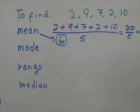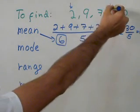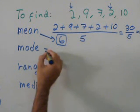Then mode. What is mode? It's the number that repeats the most. Here you have one 2, and here you have another 2. So mode is equal 2.